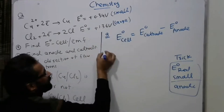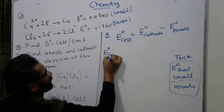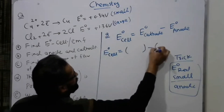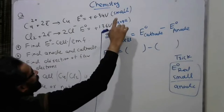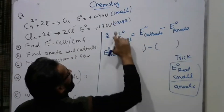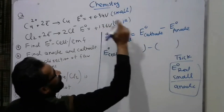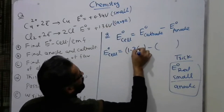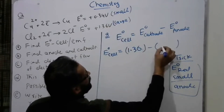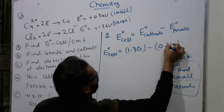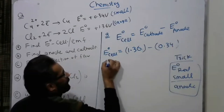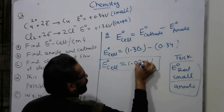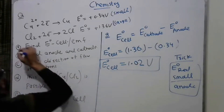So E° cell = cathode minus anode. Cathode is chlorine (1.36V) and anode is copper (0.34V). Therefore E° cell = 1.36 − 0.34 = 1.02 volts. That is the answer for Part A.